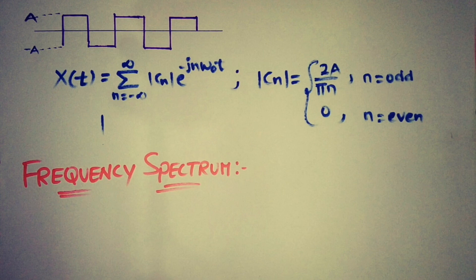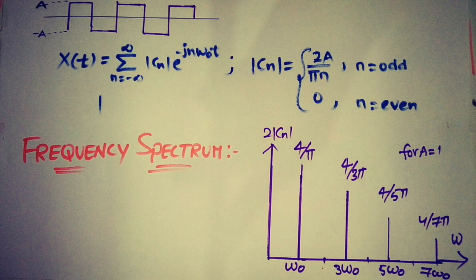The frequency spectrum is the graphical display of the harmonic content of the signal. Here, 2cn is the magnitude of the harmonics and it is plotted against the frequency. As the frequency increases, the harmonic amplitude decreases for a square wave.